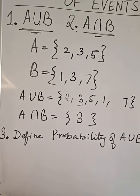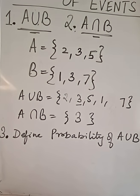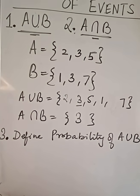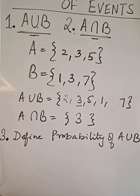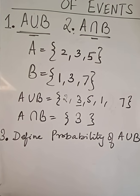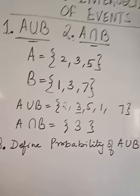So, that means intersection of event contains just the common elements from the two events. Now, we will define the probability formula of A union B.